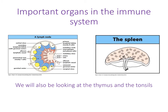We'll first think about the important organs in the immune system. You've been introduced to some of these in the lectures. We'll be looking at lymph nodes, the spleen, the thymus, and the tonsils, and trying to understand how those tissues are organized and what the various different structures of them are.